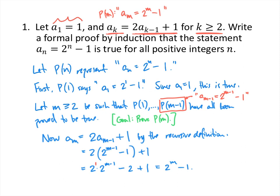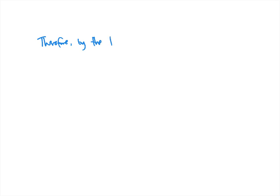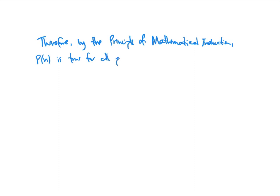The only thing left is to draw our conclusion. Therefore, by the principle of mathematical induction, P of n is true for all positive integers n. That's a standard conclusion for any induction proof — you're saying: I did the base case, I did the induction step, and together, by the principle of mathematical induction, I've proved what I was trying to prove.